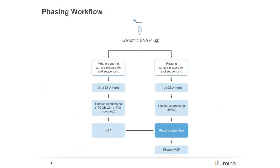When whole genome sequencing projects are submitted to the IGN for phasing, the samples go through the following workflow. Our standard whole genome sequencing workflow is for genomes with greater than 30x average coverage, where one of the deliverables is a variant-containing VCF file. The phasing-specific workflow begins by processing one microgram of DNA input with the phasing library prep, then using short paired-end sequencing to generate one lane of raw sequence data. The raw data and the VCF file are then ported into Illumina's proprietary phasing algorithm and variants are assigned in phase. The final output is a phased VCF file for further downstream analysis and visualization. Thanks for listening, and we look forward to working with you on your whole genome sequencing projects.